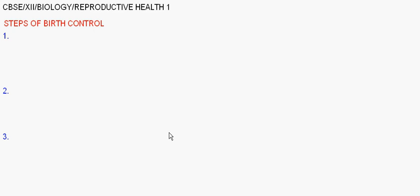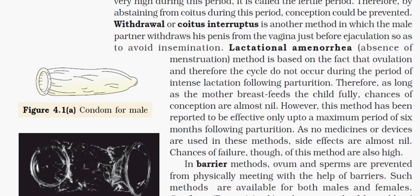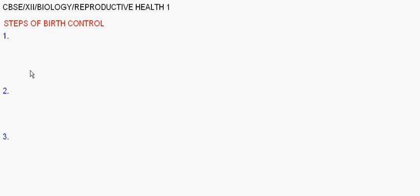This is about birth control. Birth control refers to processes followed to prevent unwanted or more than intended pregnancies. The following processes can be used: natural methods, barriers, intrauterine devices, pills, and sterilization or surgical methods.